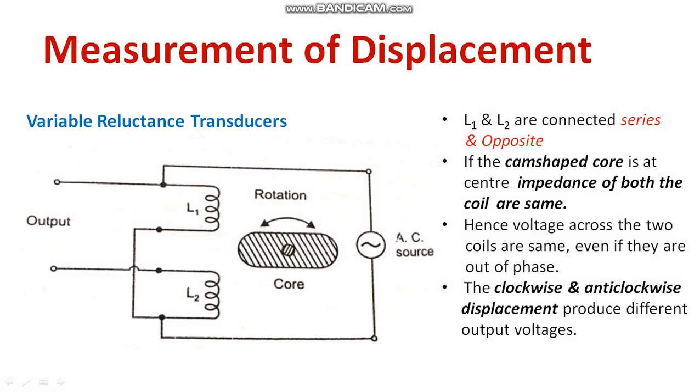This is a quite simple method. In summary, displacement is directly proportional to output voltage, allowing you to predict both magnitude and direction. Since displacement is a vector quantity, you can measure both. This is the variable reluctance transducer.